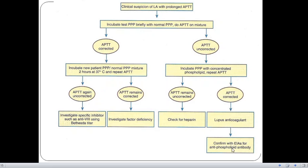And then, if APTT is corrected, we have to check for lupus anticoagulant. And then, confirm with the ELISA for antiphospholipid antibodies. That is the whole workup of prolonged APTT.